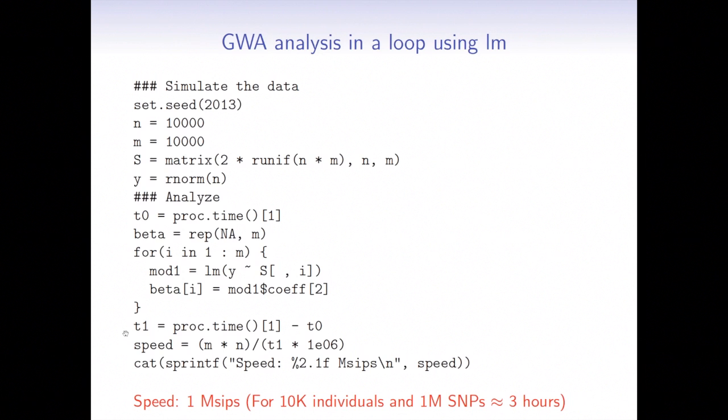That was one mega-sip. So for 10,000 individuals and one million SNPs, we would need around three hours on my computer. You can give this number of three hours when I will compare it in a moment to our proposal.